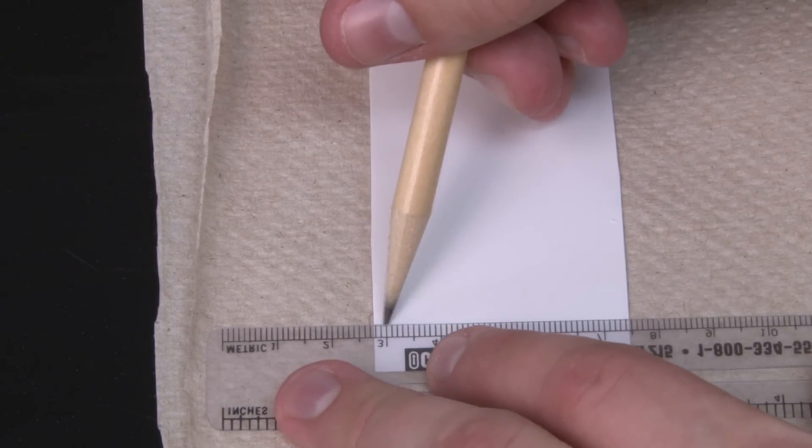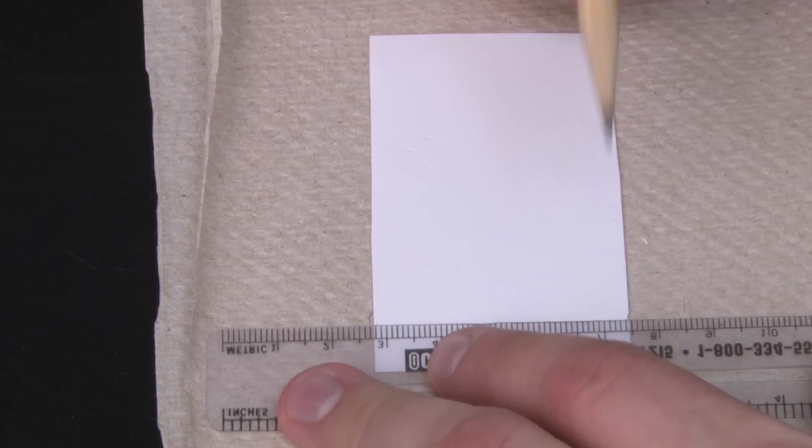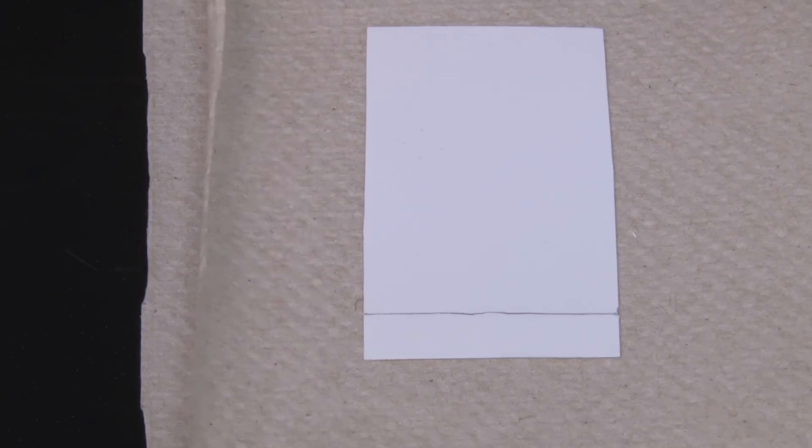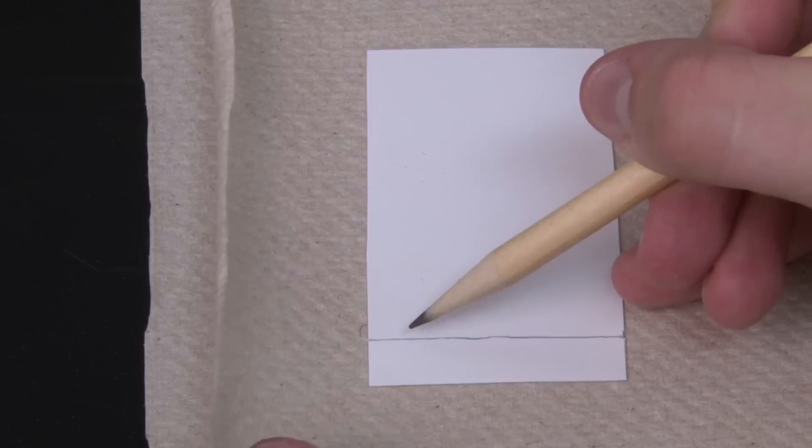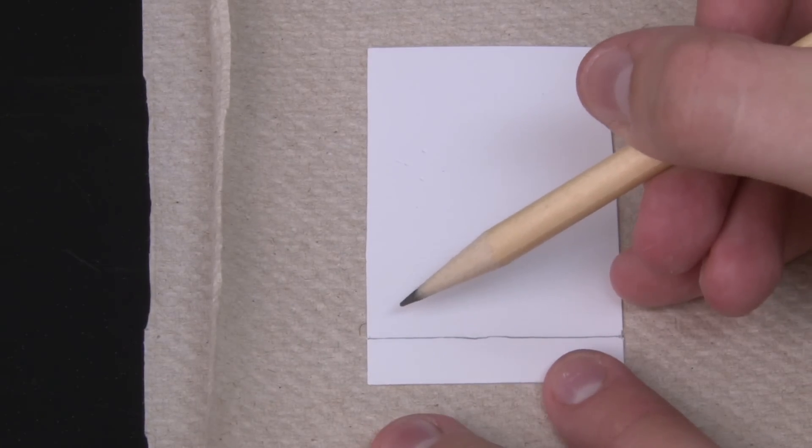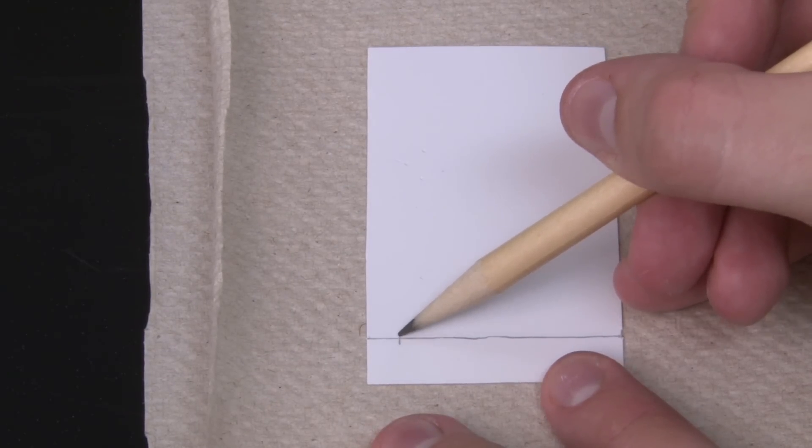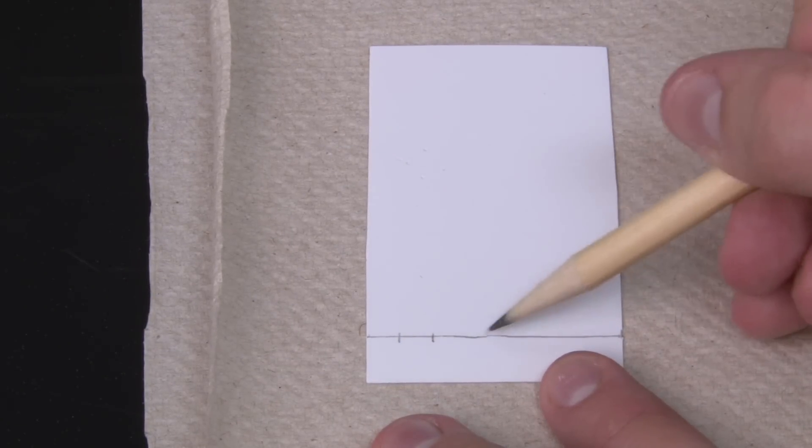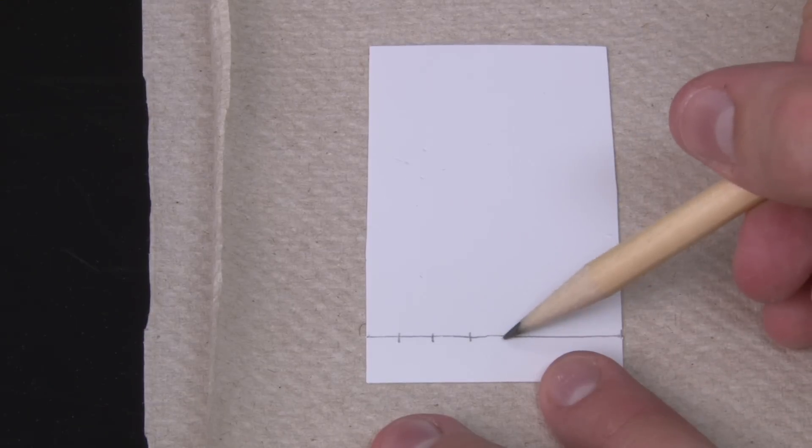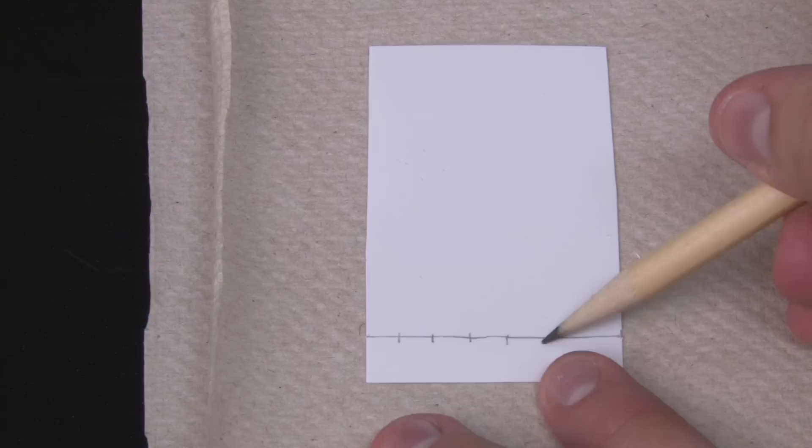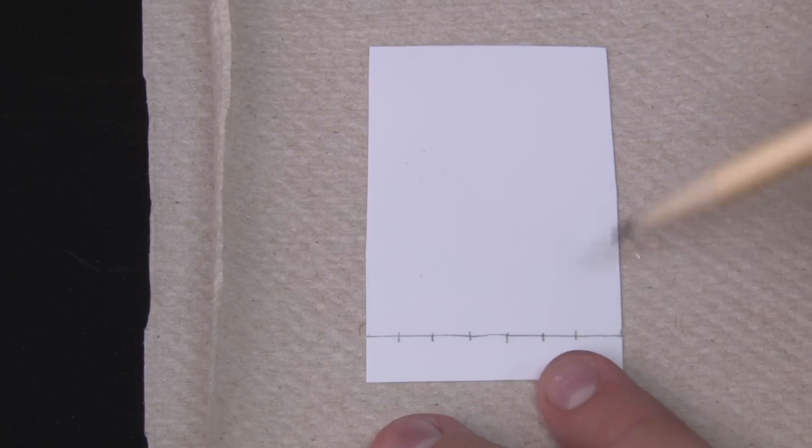Use a pencil to draw a light line on the powdery side about one centimeter from the bottom. Then draw six hash marks evenly spaced along the line, leaving a little extra room on the edges. If your TLC sheets are smaller, your instructor may have you use two sheets. These hash marks are where the samples will get applied.